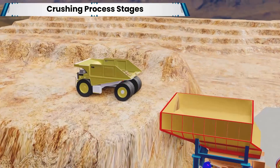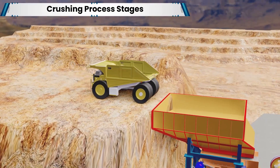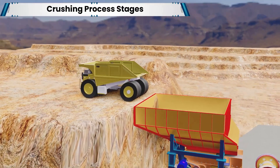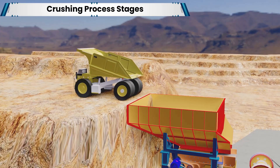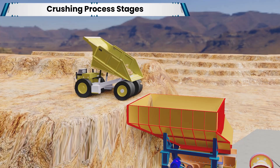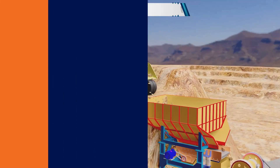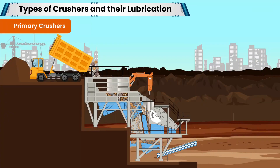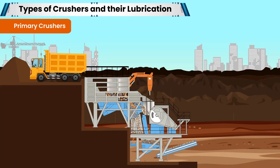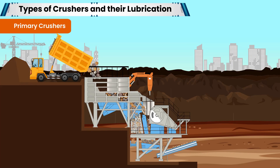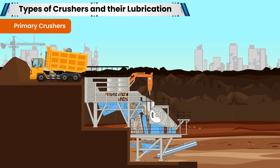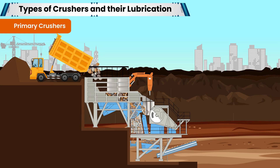Upon arrival at the crushing facility, the raw materials are crushed to smaller, more manageable sizes to facilitate further processing. Primary crushers employ the compression or impact working principle, where the finished product is relatively coarse.